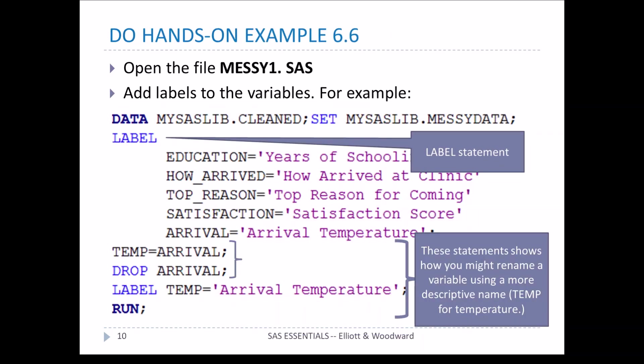We use the LABEL statement to assign labels to variables like education, how I arrived, and others. We also create a new variable: one variable called 'arrival' is actually arrival temperature, so we rename it by setting temp equal to arrival, dropping the arrival variable, and giving temp the label 'arrival temperature'.